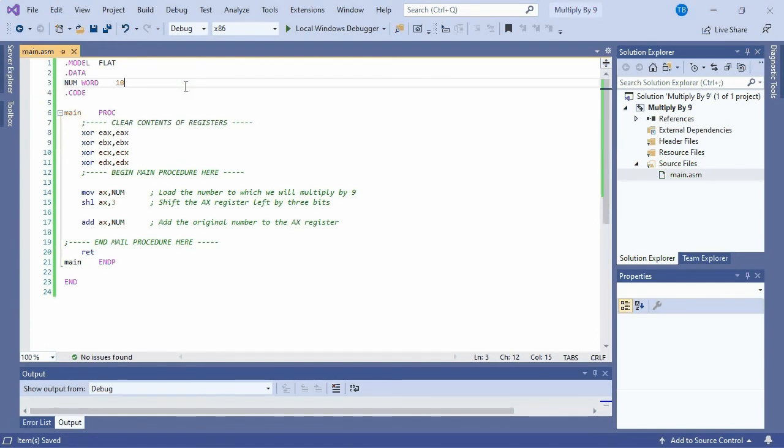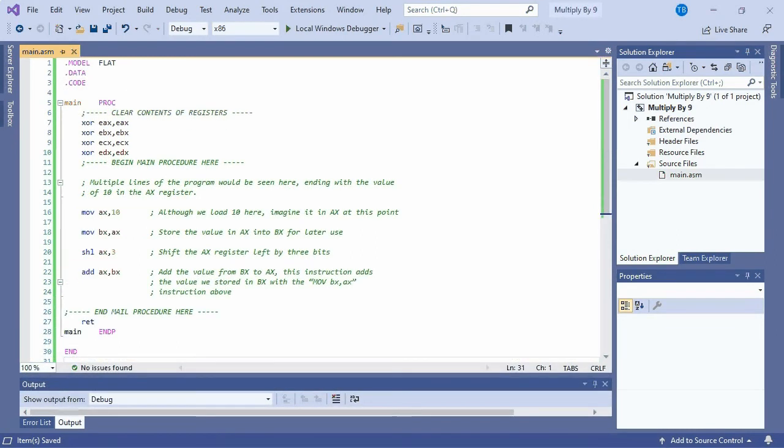What if the number we want to multiply by 9 isn't known ahead of time? For example, during the execution of a program, we arrived at the value 10, which needs to be multiplied by 9. In this final example of multiplying by 9, we will see how to temporarily store our original number in a register.